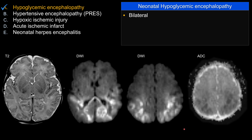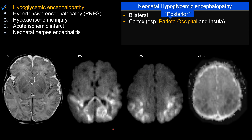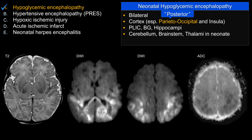The involvement is bilateral, and the cortical involvement tends to be parietal occipital lobe, posterior temporal lobe, and insula — in other words, posterior distribution, like in this case. Notice the sparing of the anterior aspect, the frontal lobe. The posterior internal capsule, basal ganglia, and hippocampi can also be involved.